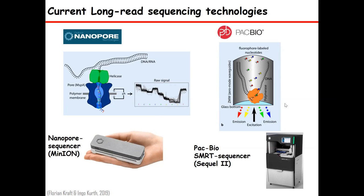Compared to nanopore, PacBio has a kind of size limit — you cannot get as long reads — since it uses sequencing by synthesis. However, with nanopore, it doesn't matter how big the DNA is; it just passes through and produces sequence. For example, recently more than two megabase single-read sequences have been generated using nanopore, which is the highest achieved by any sequencer.